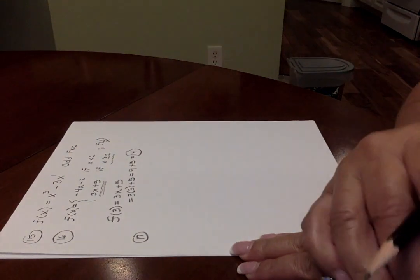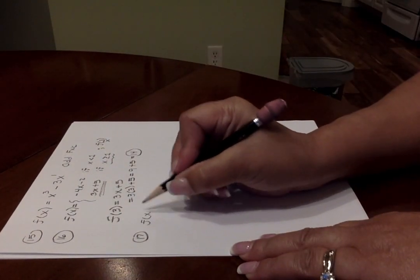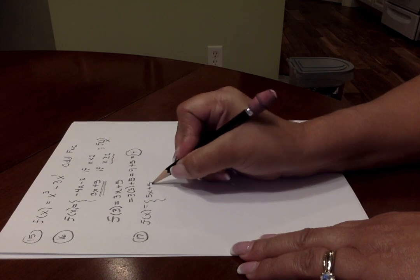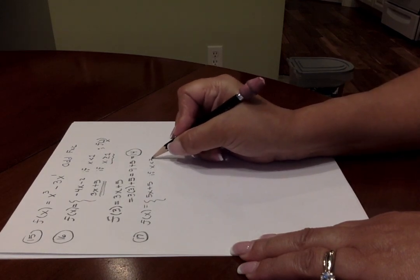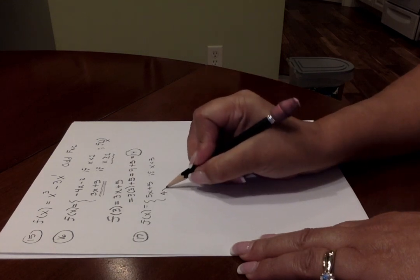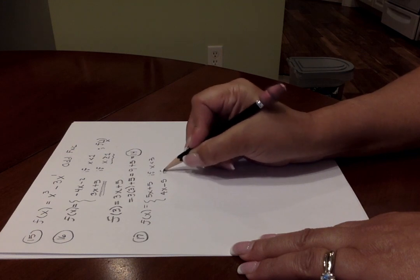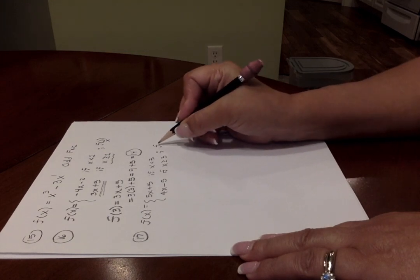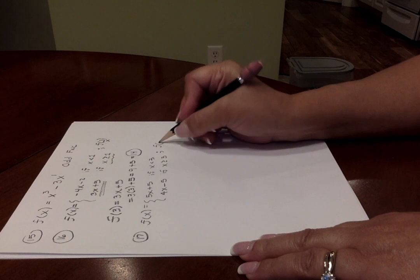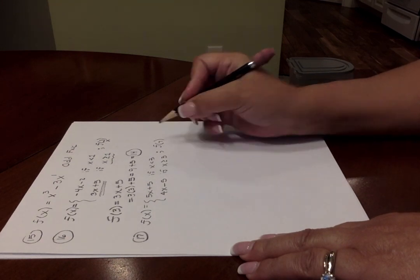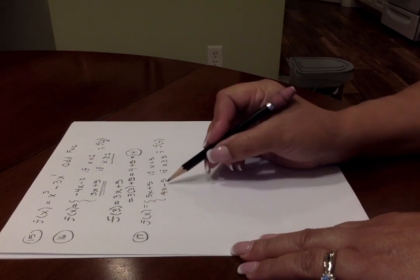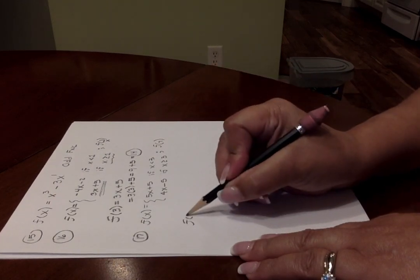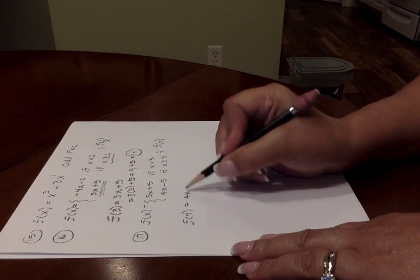Number 17, problem number 17, again you're given a piecewise function. The piece at the top is the expression 5X plus 5, you're to use that piece if your X value is less than 3. And you're to use this piece, 4X minus 5, if your X value that you're plugging in is greater than or equal to 3. So the question is, pick the appropriate function and evaluate at 7. You are to use this bottom piece of the function, 4X minus 5, if your X value that you're plugging in is greater than 3. It is.